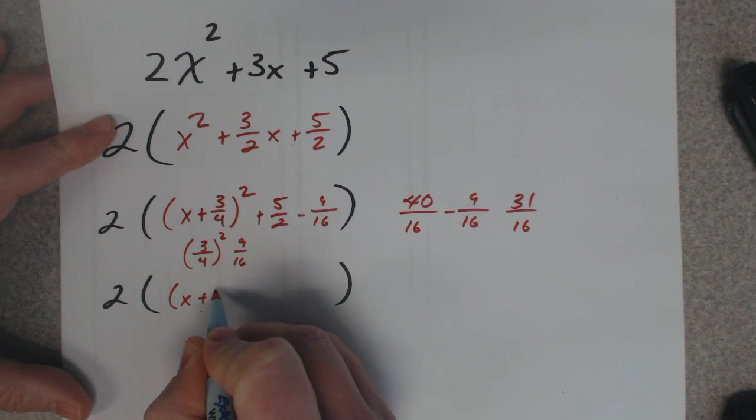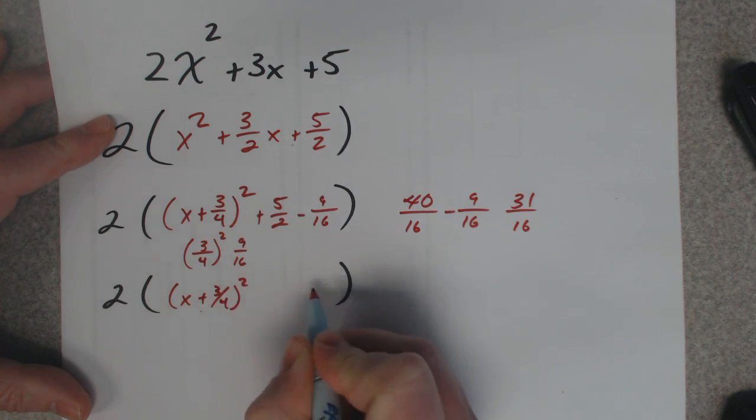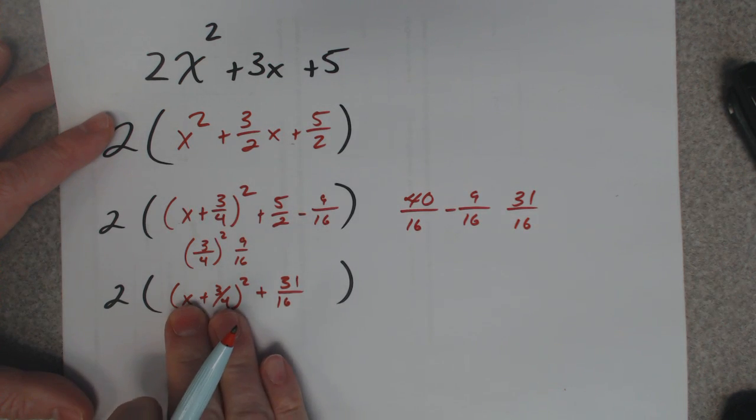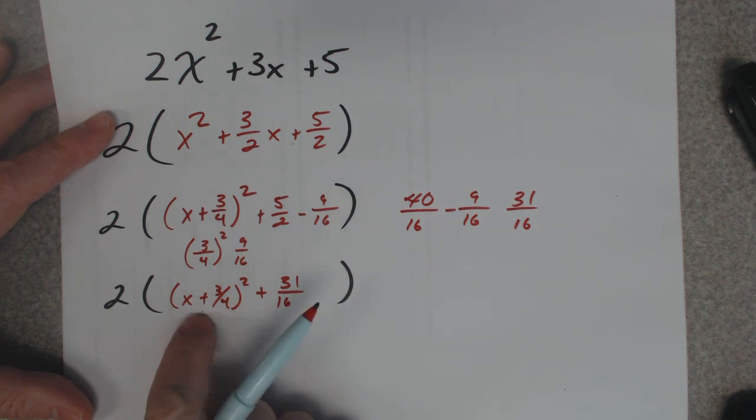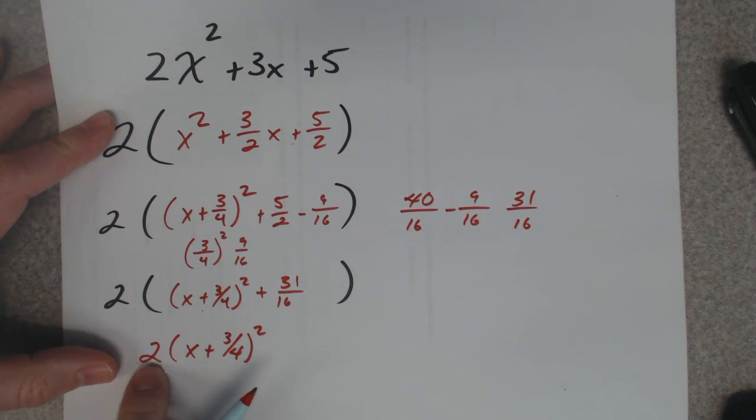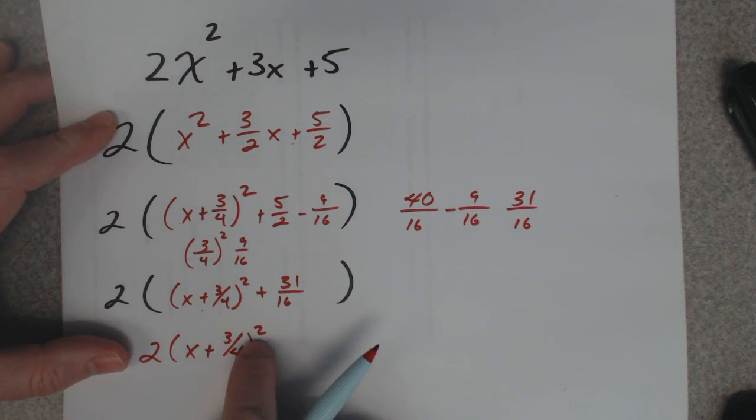So I get x plus 3 fourths squared plus 31 sixteenths. Now distribute the 2 to both these pieces – this is one piece and this is the second piece. So multiply that by 2, I just keep the 2 on the outside. In vertex form they want that 2 on the outside; don't distribute it in there.